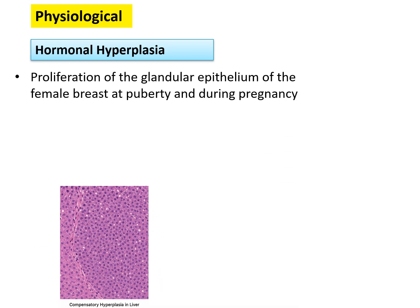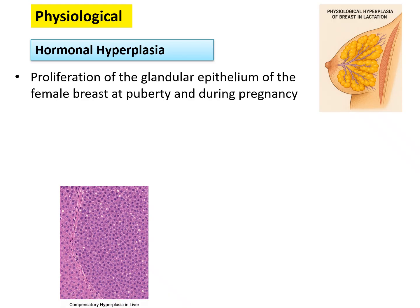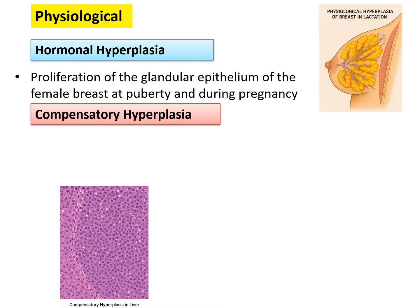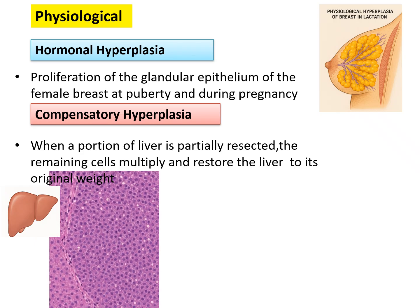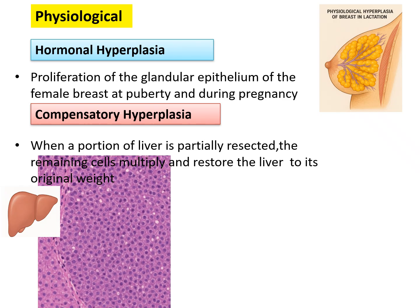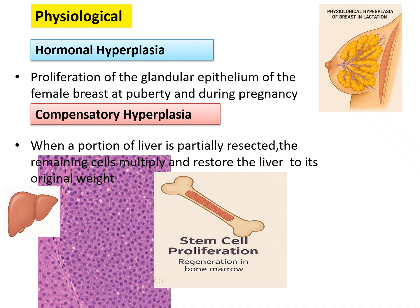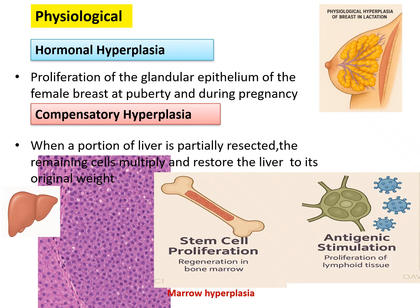Hormonal hyperplasia involves proliferation of glandular epithelium of the female breast at puberty and during pregnancy — breast physiological hyperplasia in lactation and pregnancy is the best example. Compensatory hyperplasia occurs when a portion of the liver is partially resected — the remaining cells multiply and the liver regains its original weight. Bone marrow hyperplasia and lymphoid hyperplasia during infection are also examples of physiological hyperplasia.